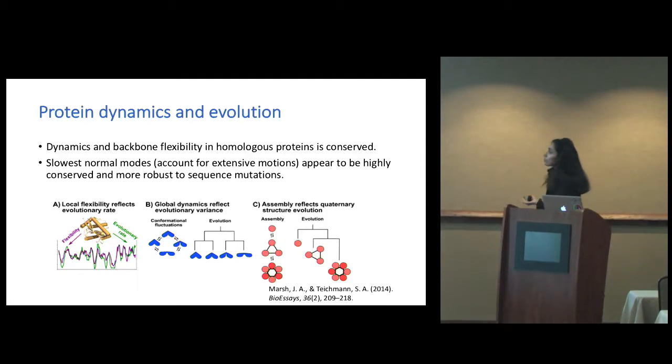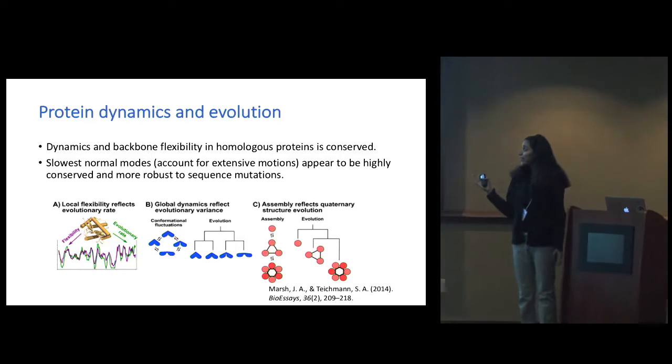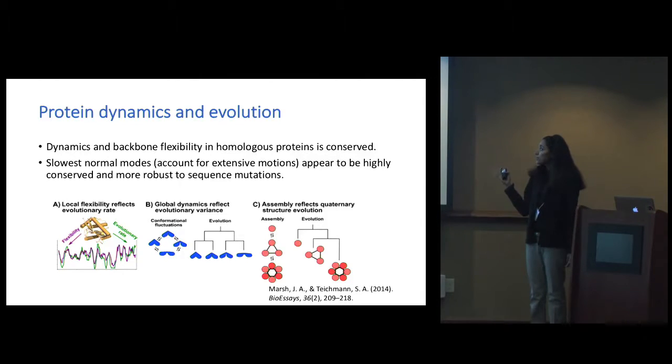Looking at dynamics and evolution, dynamics and flexibility in homologous proteins has been studied to be conserved. Two homologous enzymes were taken with different functions and there were differences in their dynamics because they had different functions. However, two enzymes with different structures but the same function showed similar patterns of dynamics. The slowest normal modes that account for extensive motions in these proteins appear to be highly conserved.